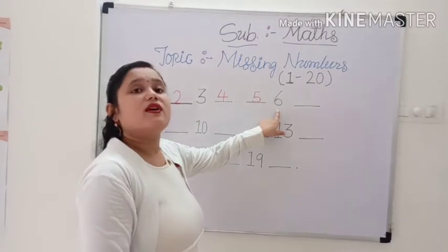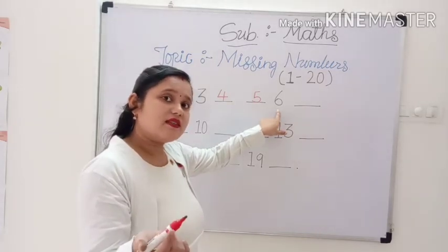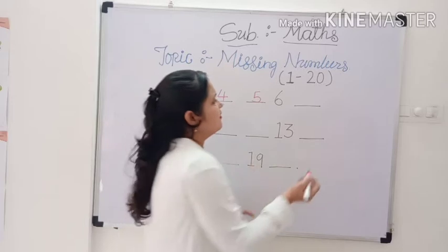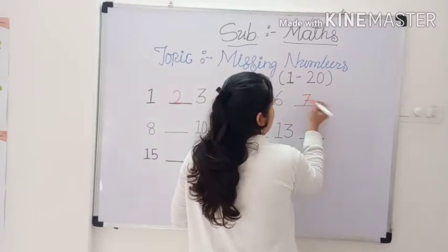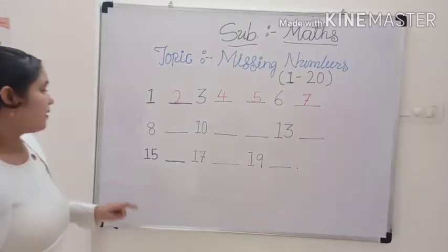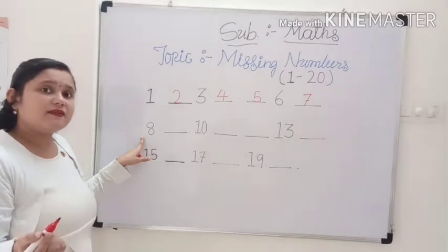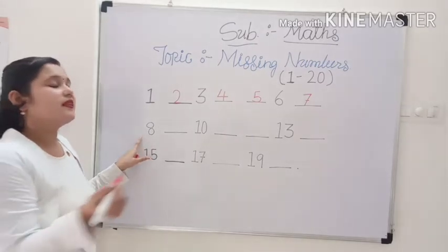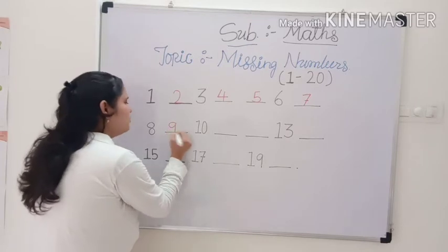This is number 6. Which number comes after 6? 7. This is number 8. Which number comes after 8? 9. Good.